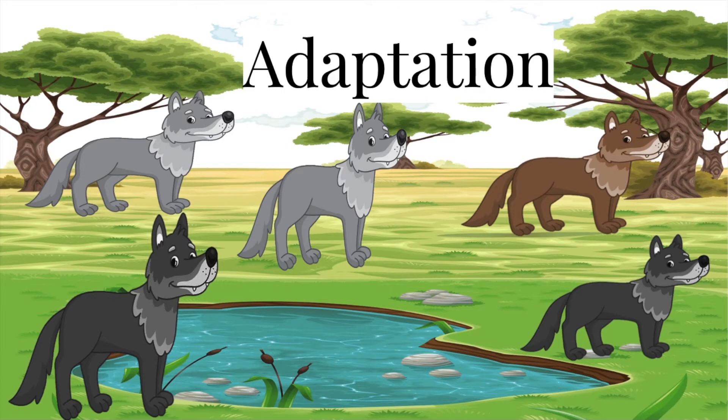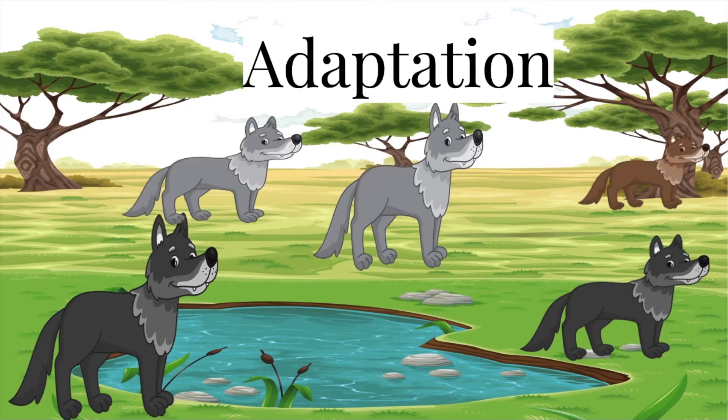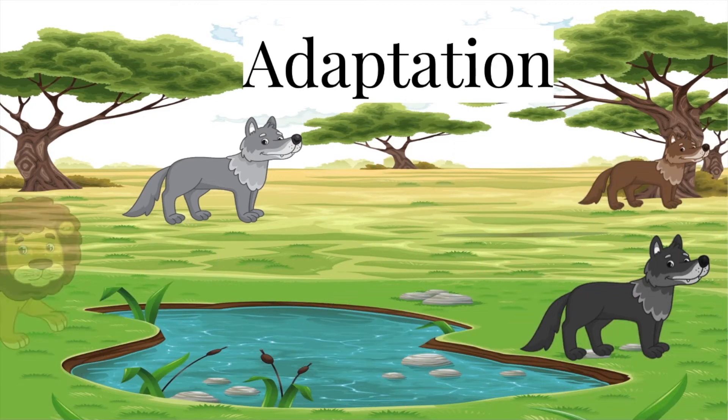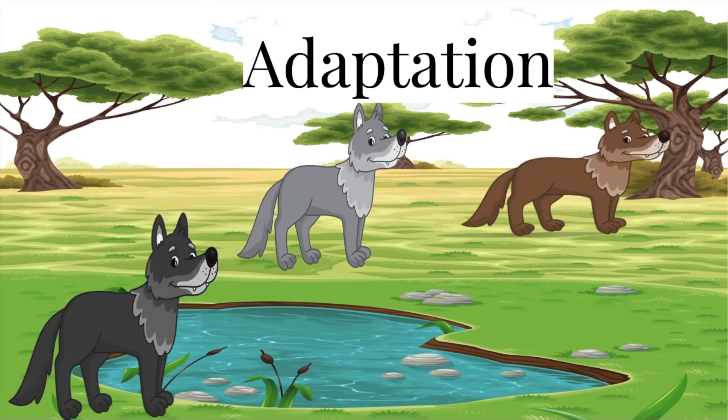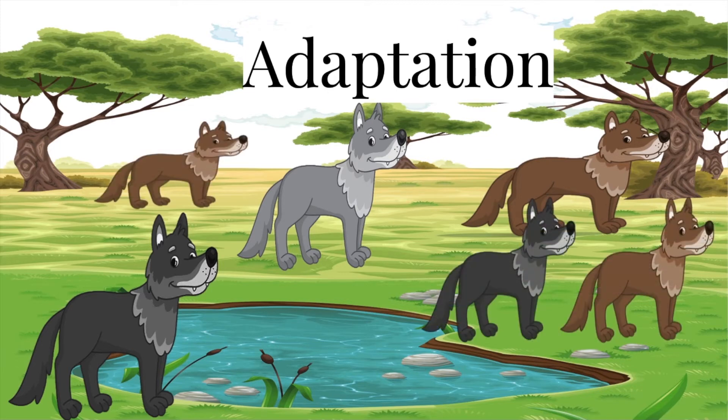organisms with adaptations suited for their environment are better at surviving than organisms who don't have those adaptations. The organisms with adaptations use them to survive their environment, while the organisms without adaptations don't survive. So, the organisms that survive with their adaptations live to pass on their useful adaptations to their children. The repetition of this whole process over time is what evolution is all about.